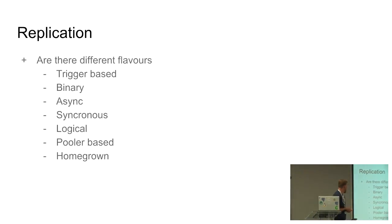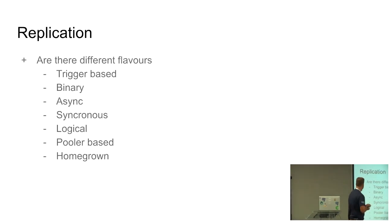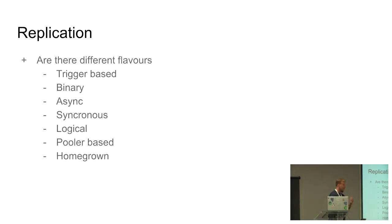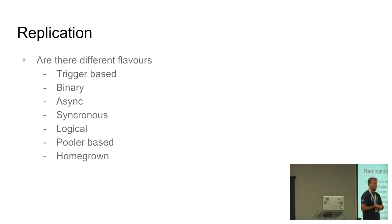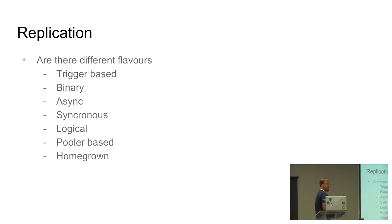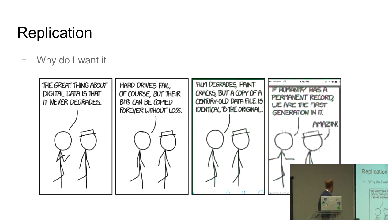The different types of replication: the older Slony-style trigger-based ones, the binary replication which covers sync and async — that's what I'm going to do today — logical replication which is a newer feature, replication via a pooler like PG Pool, and homegrown select-from-table-insert-somewhere-else based on a trigger.